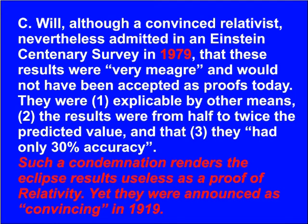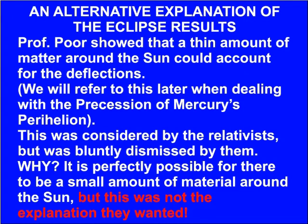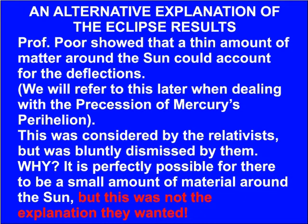Yet they were announced as convincing in 1919. As an alternative explanation, Professor Poor showed that a thin amount of matter around the Sun could account for the deflections — and we will be referring to this later when dealing with the precession of Mercury's perihelion. This was considered by the relativists, but was blankly dismissed by them. Why? It is perfectly possible for there to be a small amount of material around the Sun, but this was not the explanation they wanted.